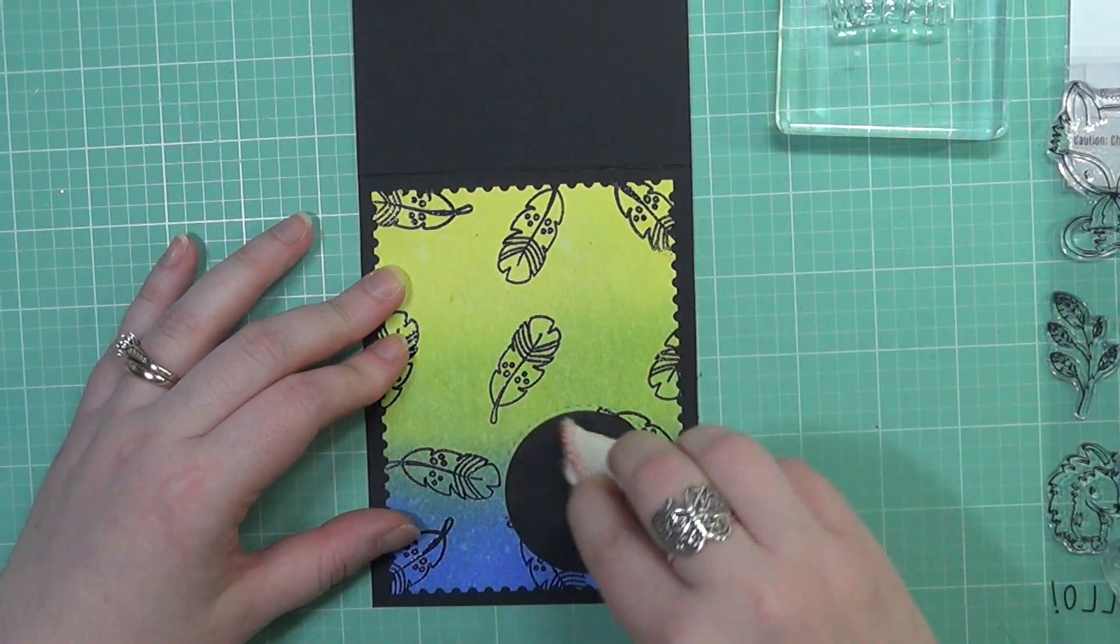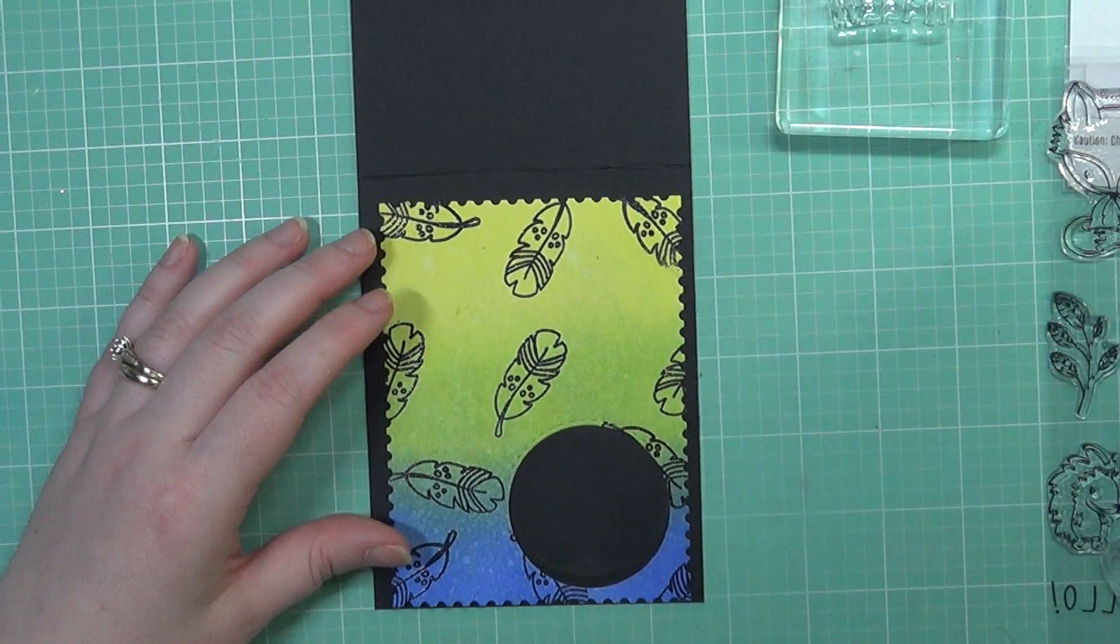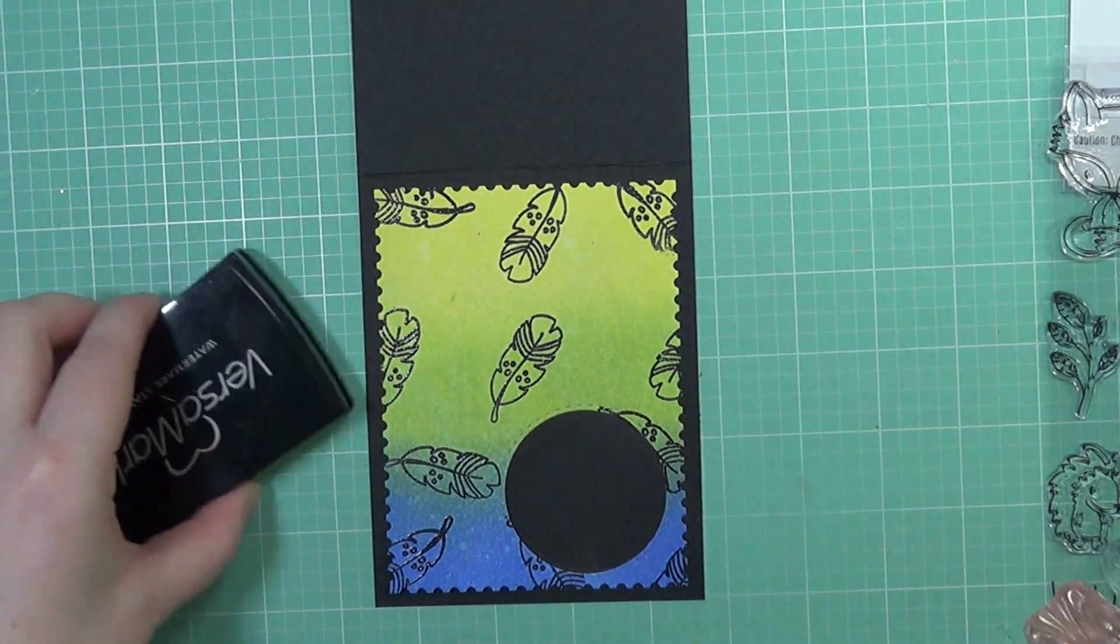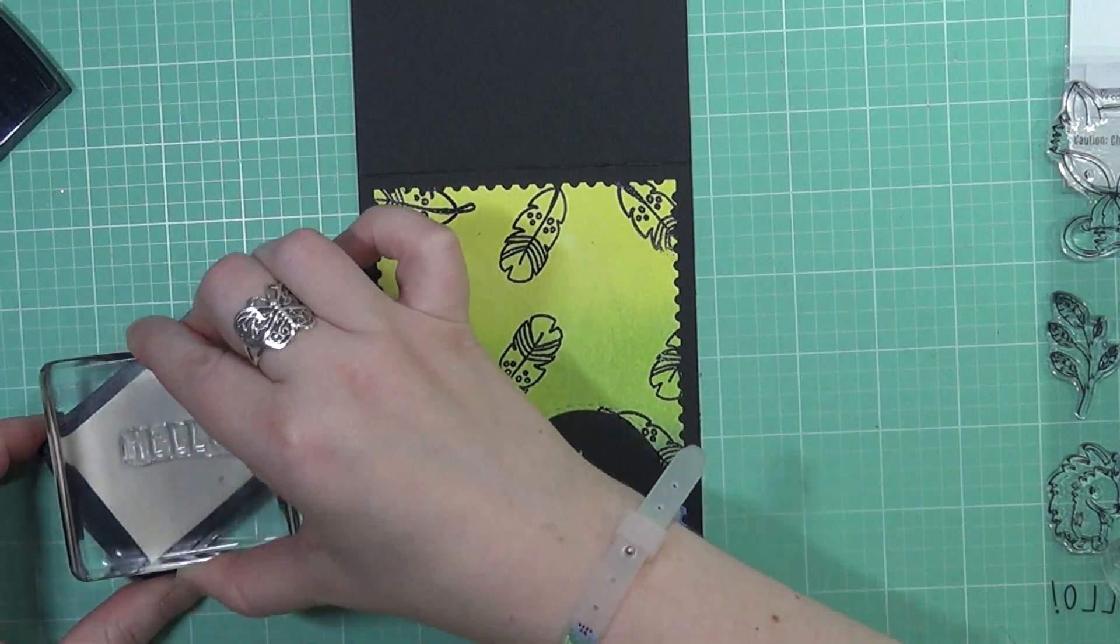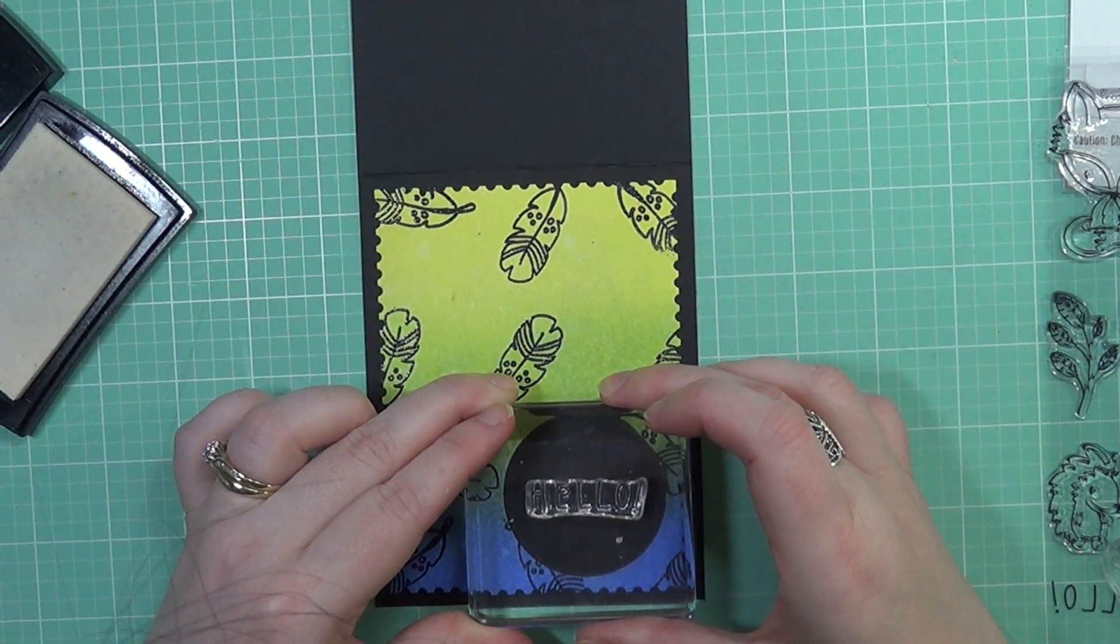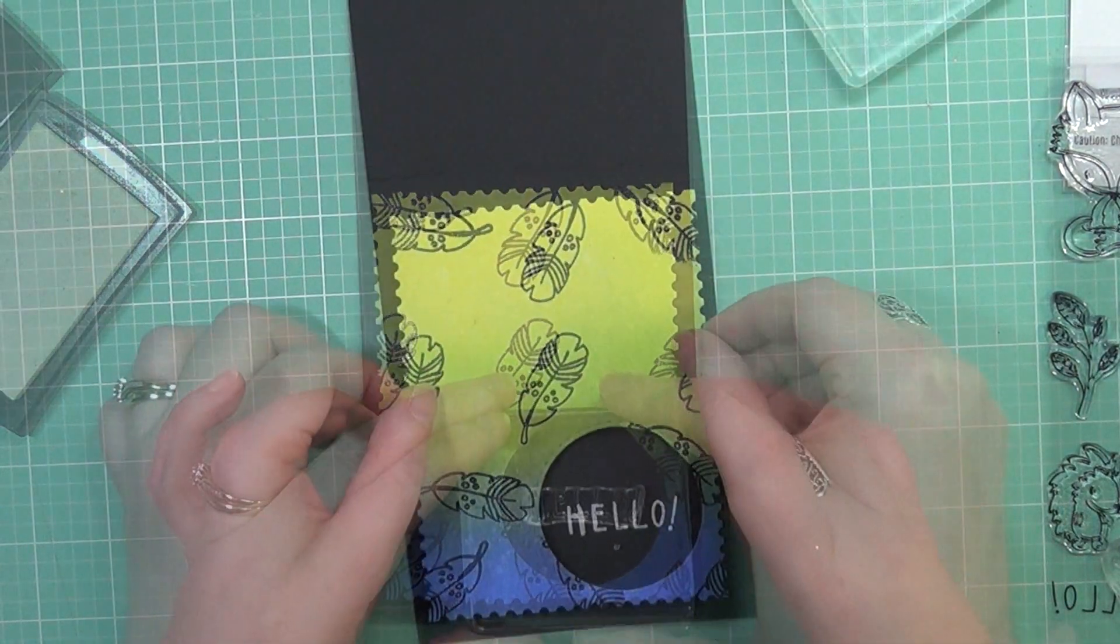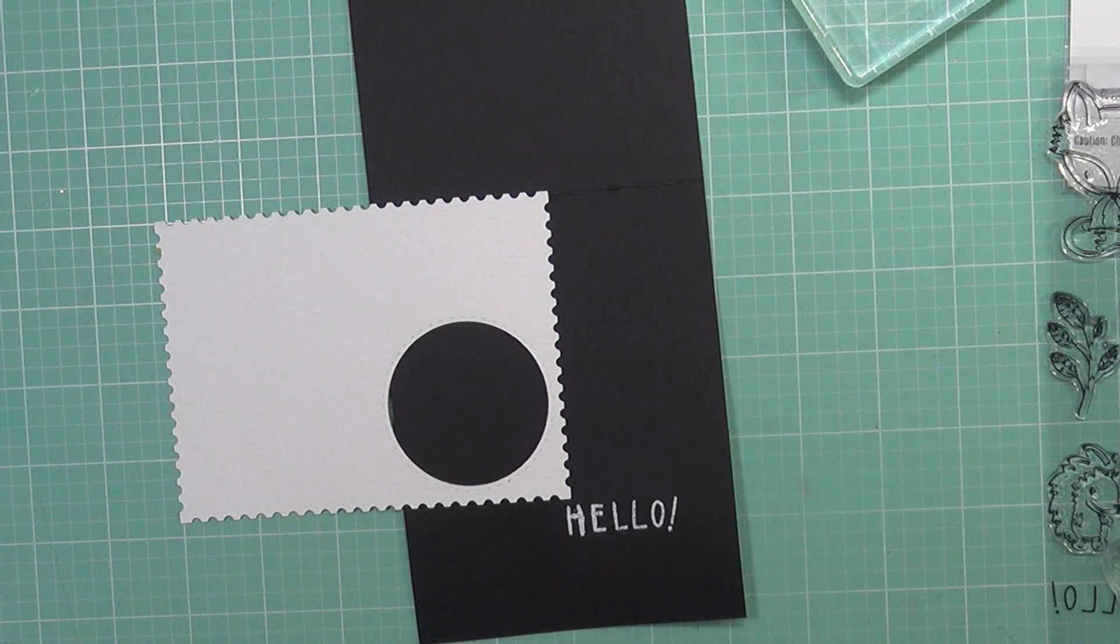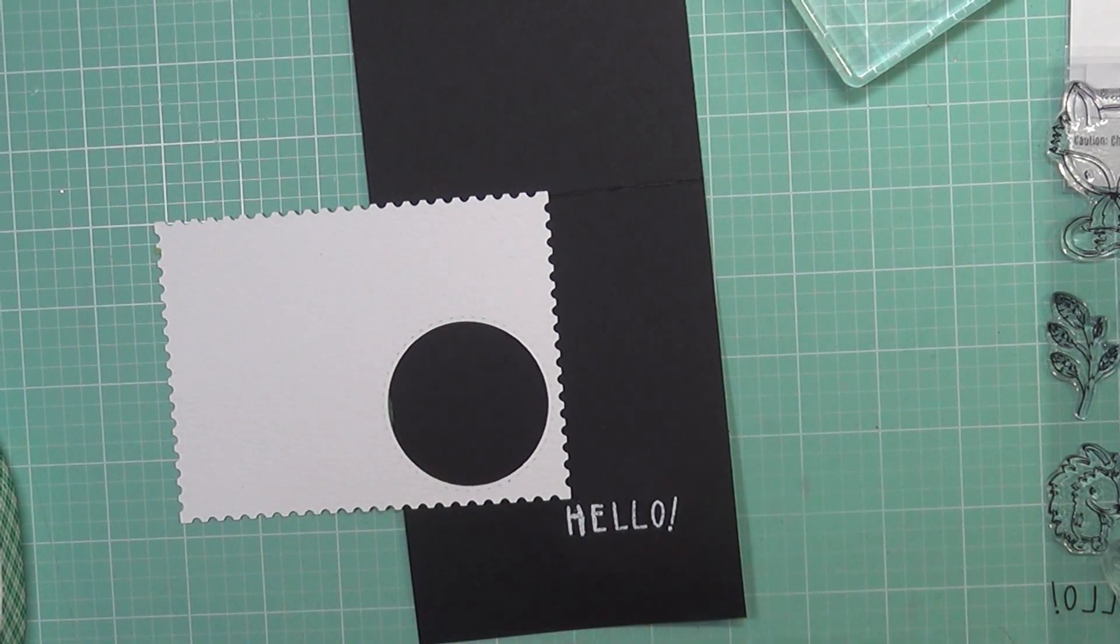I did go ahead and cut this off camera with a postage edge rectangle die, as well as the bottom right corner there. I added a die cut circle too, just to add a little bit of interest to the card design. Then I heat embossed the hello sentiment that comes in the same stamp set, and I heat embossed that with some white embossing powder.